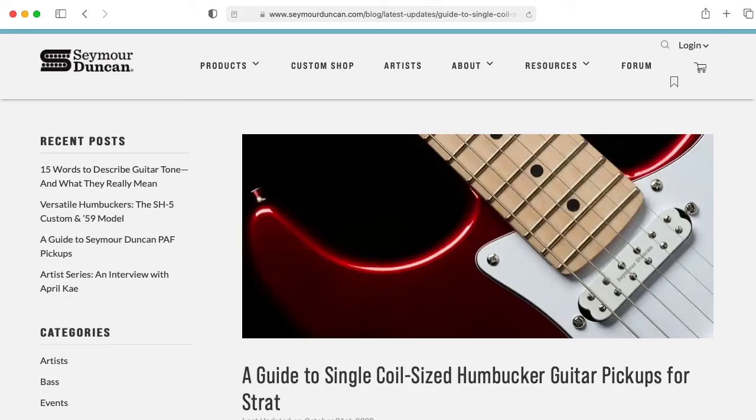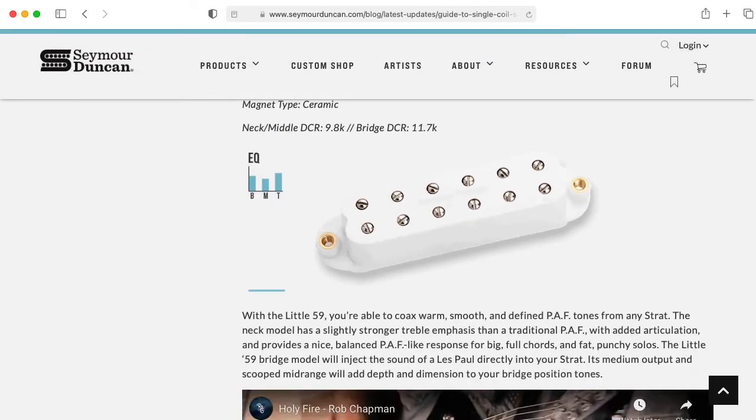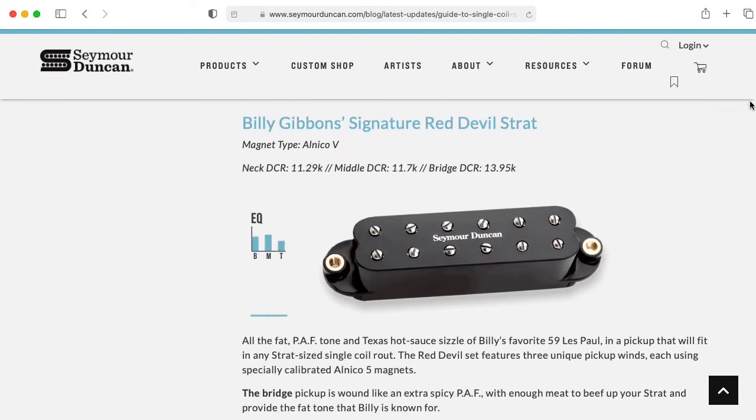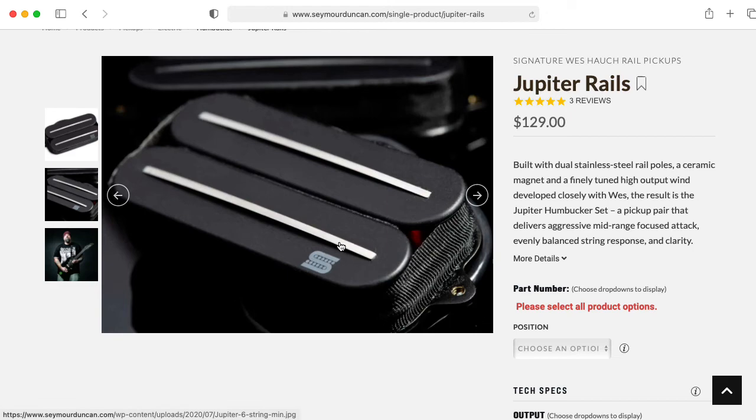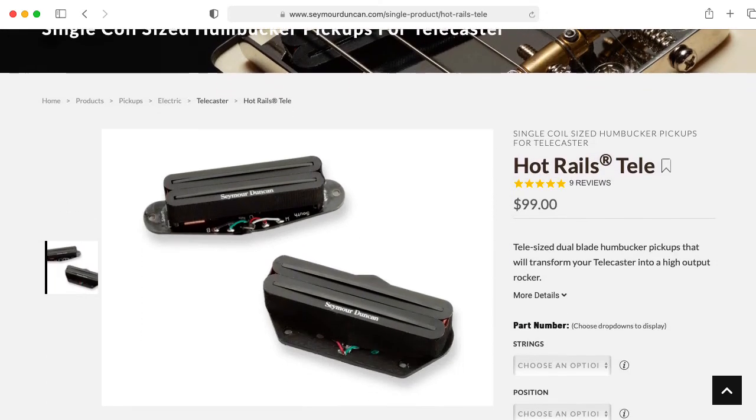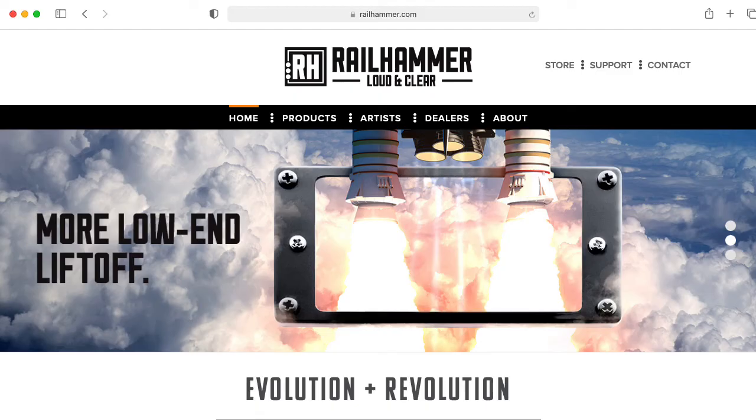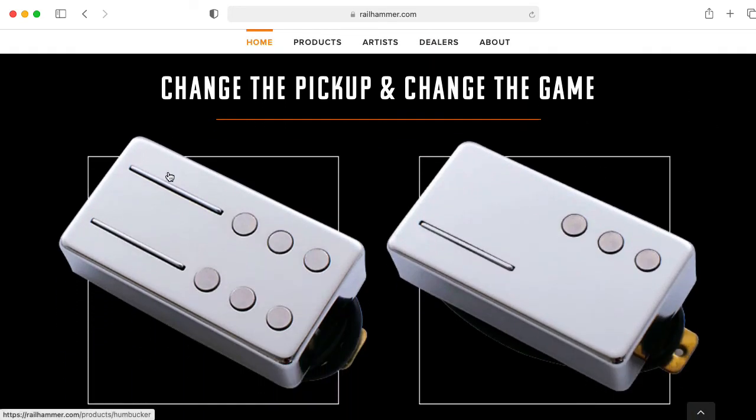Instead of stacking, you could also take a standard side-by-side humbucking kind of design and just squish it in order to try to get it to fit in a standard single coil slot. I've been talking about traditional pole piece designs, but you can also make humbuckers using rail kind of structures. And you can squish one of these rail-based humbucker designs to fit in a standard single coil slot. I also came across this rail hammer company that makes these humbuckers that have a combination of rail structures and pole pieces.